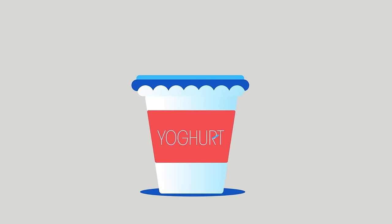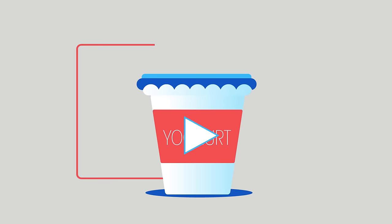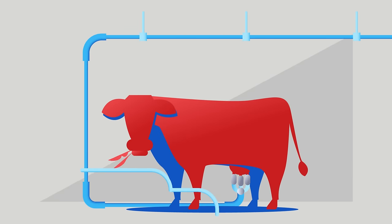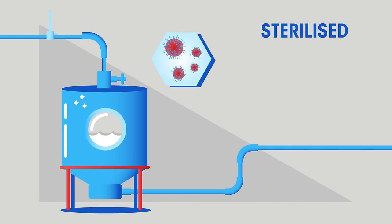So in this video we're going to learn a bit more about how yogurt is made. First we need milk. Before we start the next steps, all of our equipment needs to be sterilized to kill any unwanted bacteria and other microorganisms.